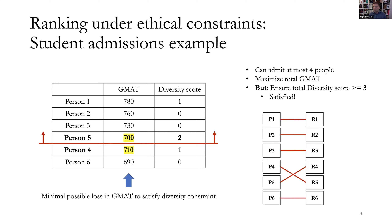In real life, this problem can be much more complicated when you have many more constraints and much more complicated setups. Furthermore, you may have to solve it very fast. Another thing to highlight is that whenever you have a primary objective and a constraint, in all but the most trivial cases, there is an inherent trade-off tension. Our work looks at this tension, the issues it may cause, and how to solve such problems really fast at real-life scale.